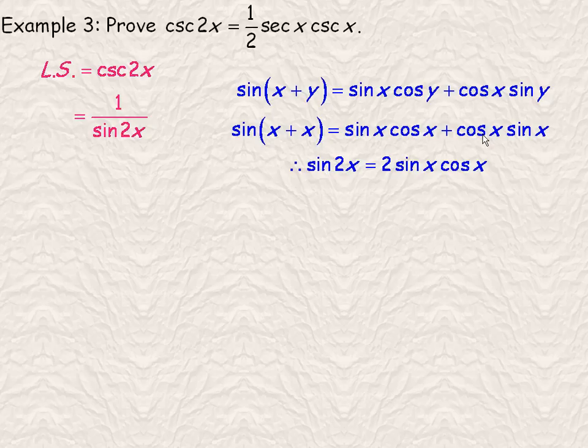And it doesn't matter whether I say cos x sin x or sin x cos x. It doesn't matter the order. It's the same thing. So there's actually two sin x cos x's here. So now we have an identity for sin 2x = 2 sin x cos x. And so that's how we get rid of the 2x here.